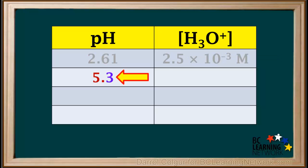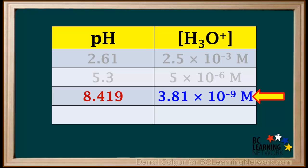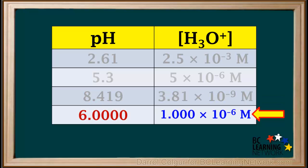The second pH given has only one significant figure, so the concentration of hydronium is 10 to the power of negative 5.3. The concentration of hydronium must be rounded to one significant figure, and the answer is 5 times 10 to the negative 6. The answer to the next example has three significant figures and comes out to 3.81 times 10 to the negative 9 molar. The answer to the last one has four significant figures and comes out to 1.000 times 10 to the negative 6 molar.